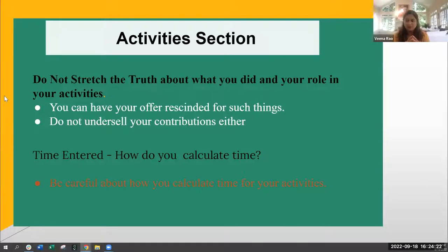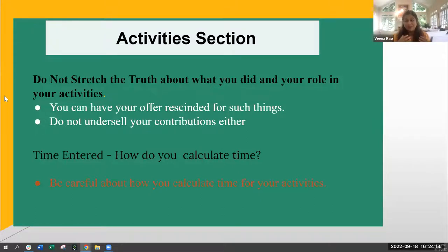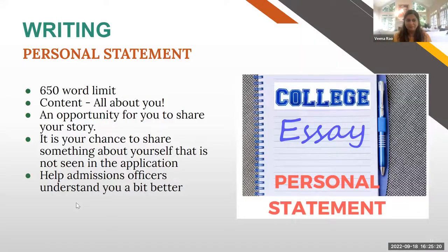If there are activities where you've truly spent a lot of time — for example, one student was a dancer who spent almost six to eight hours a day at dance camp during the summer — when you try to average that out over the year it ends up being a lot of hours. What we did was use the additional information section in the Common App to go in and explain it. If the 150 characters don't give you enough room to explain the impact or extent of your work, take the opportunity in the additional info section to give a little bit more detail about that specific activity.